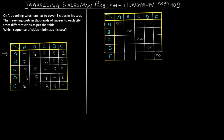Now we find the minimum value from each row and subtract it. For the first row the minimum is 2, so: 3−2=1, 6−2=4, 8−2=6, 2−2=0. For the second row the minimum is 3: 7−3=4, 4−3=1, 9−3=6, 3−3=0. For the third row the minimum is 5, giving: 4, 3, 0, 3.